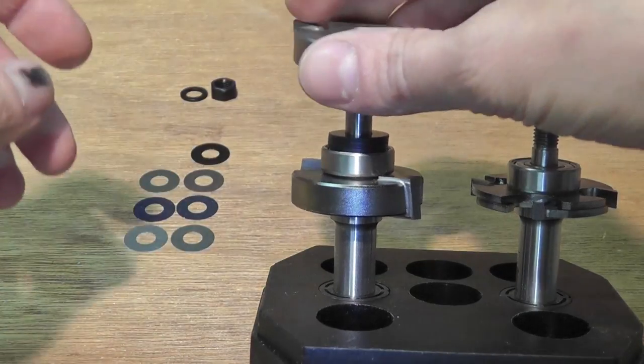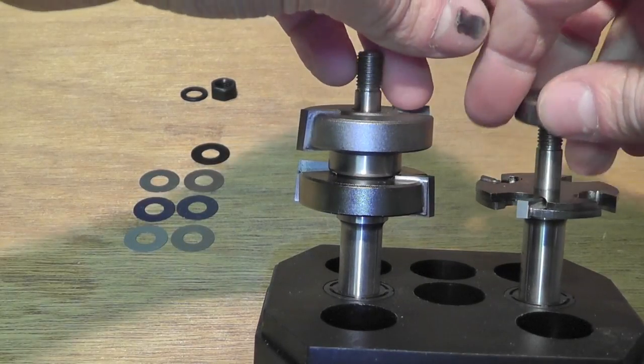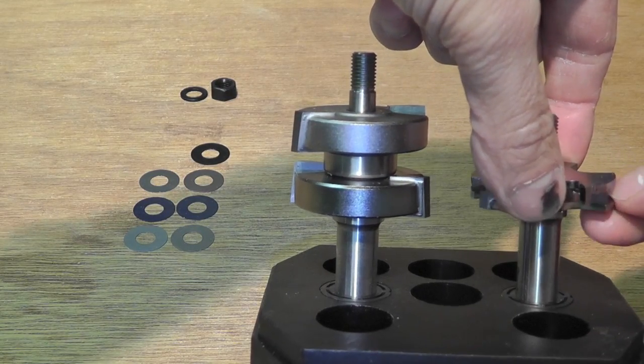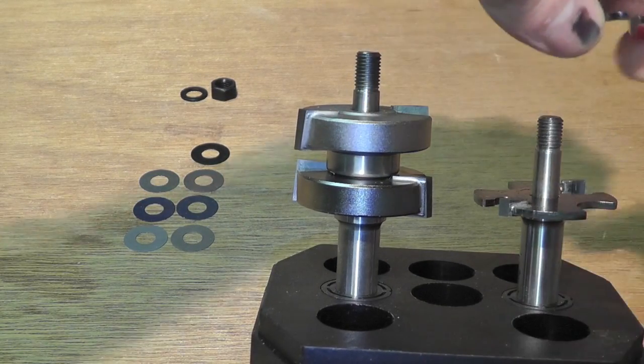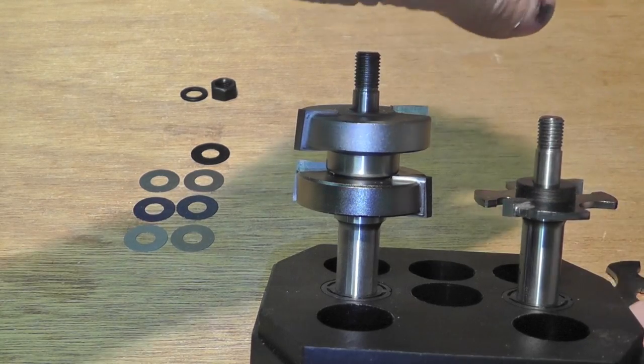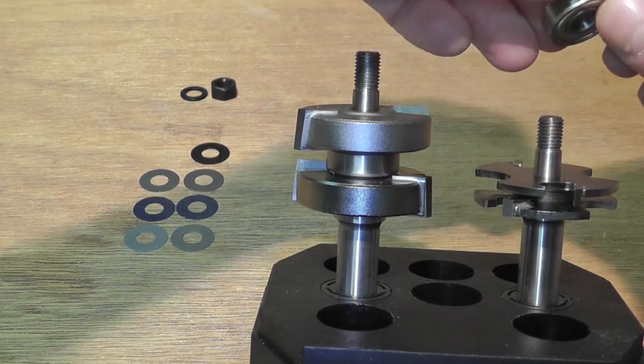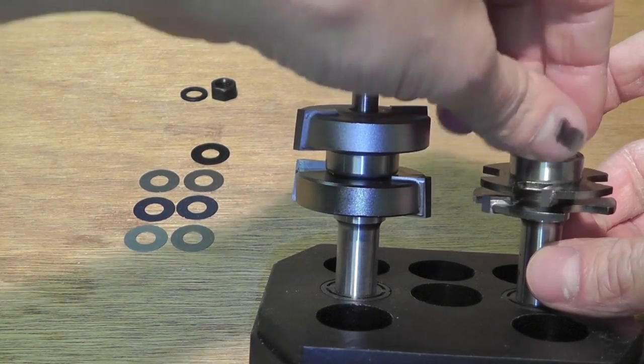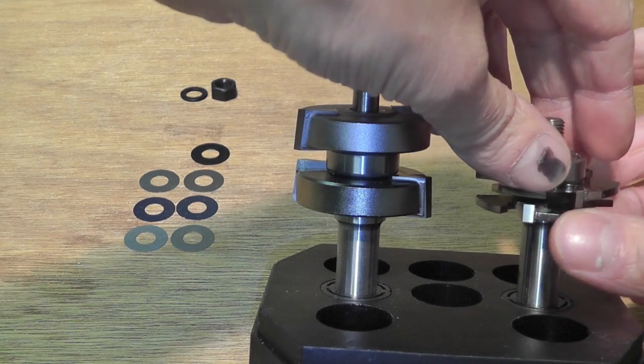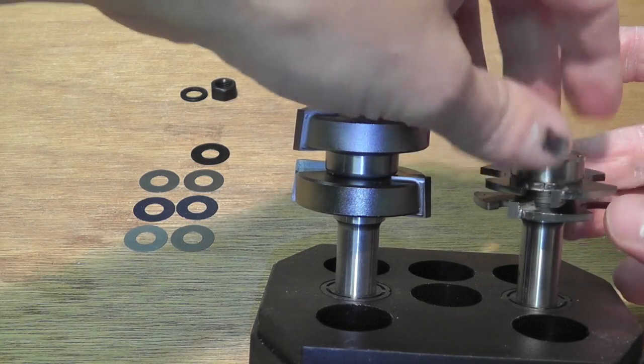That would look like this. For the groove bit, we would do the same. We would take the same amount of spacers, exactly the same spacers, and put them in between the lower and the upper cutter. Then here we add the ball bearing on top. This way we would have a 9.5 millimeter tongue and groove.